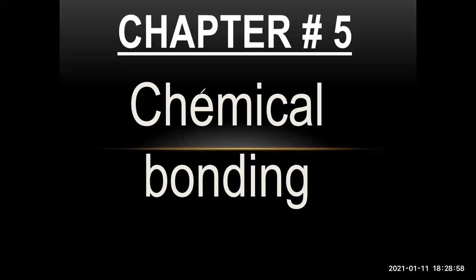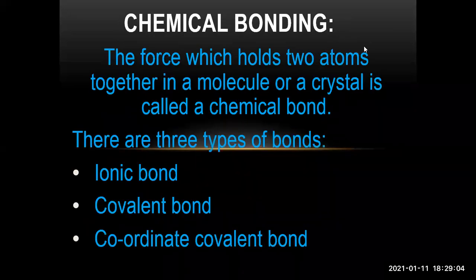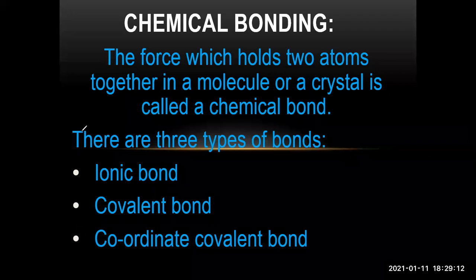So let's start our chapter. The first topic is the definition of chemical bonding. Chemical bonding is a type of force which holds different atoms together in a molecule or crystal.